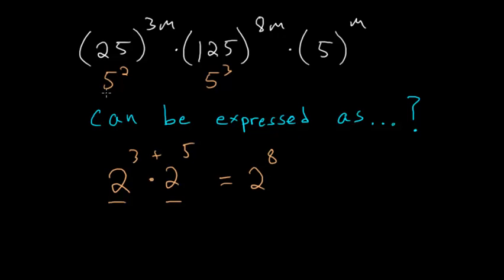So we can rewrite this using 5 as our base. So in other words, we have 5 squared to the 3m times 5 cubed to the 8m times 5 to the m.